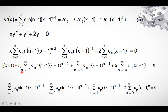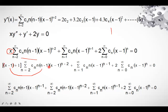After substitution, we rearrange by writing x = (x − 1) + 1, since we are computing the power series in (x − 1). This splits the x·y'' term into two parts: (x − 1) times the y'' summation, plus 1 times the y'' summation. Multiplying (x − 1) into the y'' sum shifts the exponent from n − 2 to n − 1.